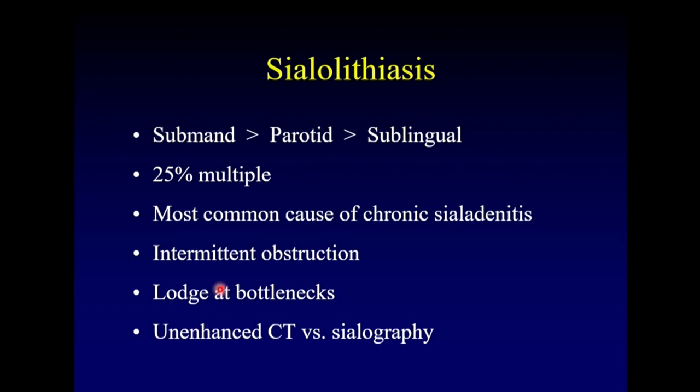Sialolithiasis affects the submandibular gland more than the parotid gland, and the sublingual gland rarely. It's unusual for the submandibular gland to be best at anything compared to its counterparts, but here it is the most commonly affected. Twenty-five percent of the time there are multiple stones. This is the most common cause of chronic sialadenitis, usually with intermittent obstruction associated with eating. Stones tend to lodge at particular bottlenecks. Unenhanced CT is probably the best way to detect these, although conventional sialography is also good, as stones will appear as filling defects.